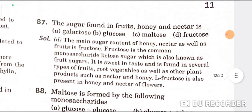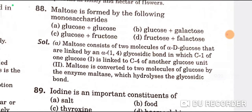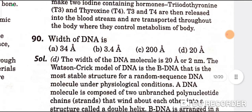The sugar found in fruits, honey, and nectar is called fructose — D is the correct option. Maltose is formed by glucose plus glucose — A is the correct option. Iodine is an important constituent of thyroxine — C is the correct option. The width of DNA is 20 Å — D is the correct option.